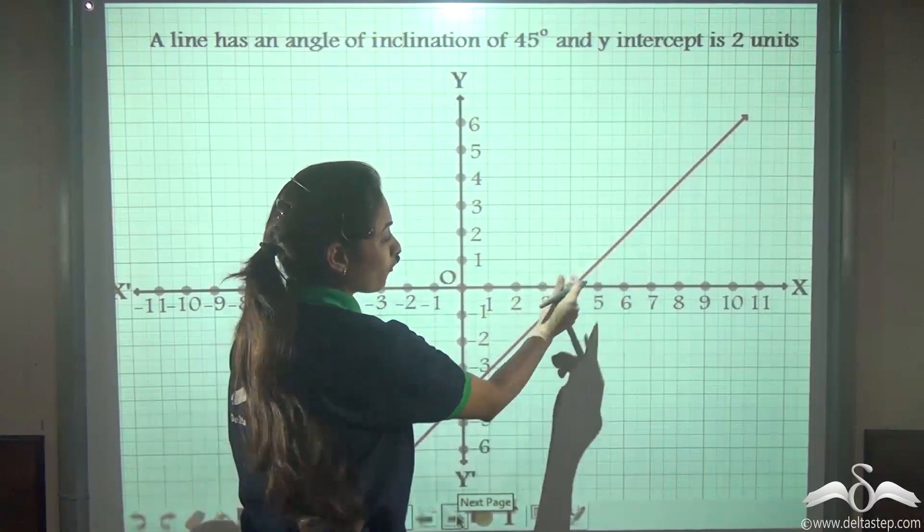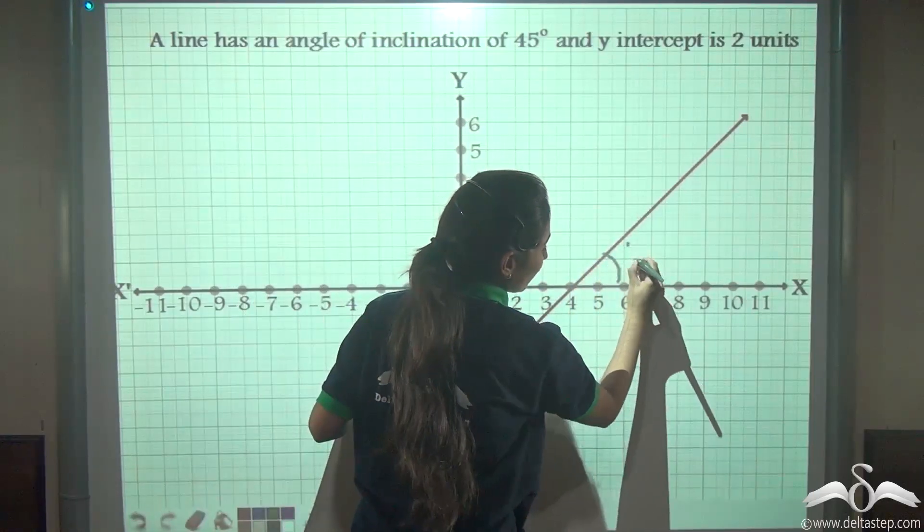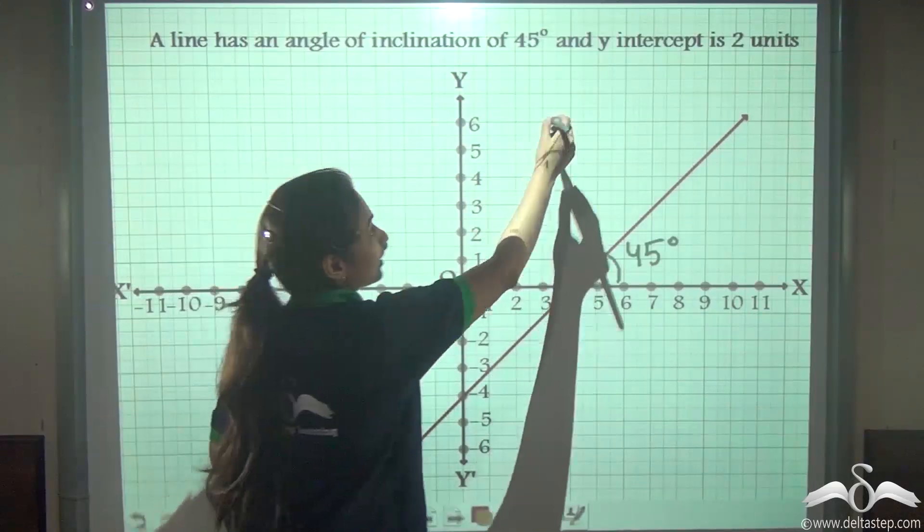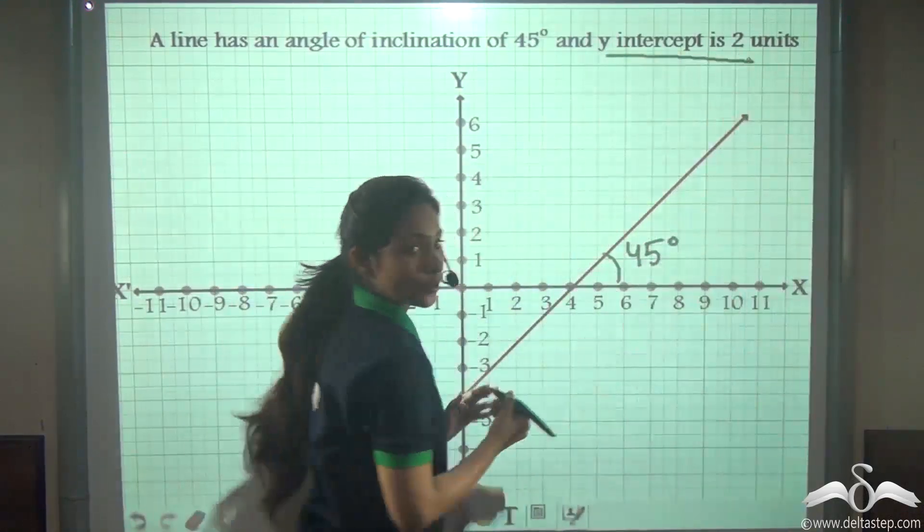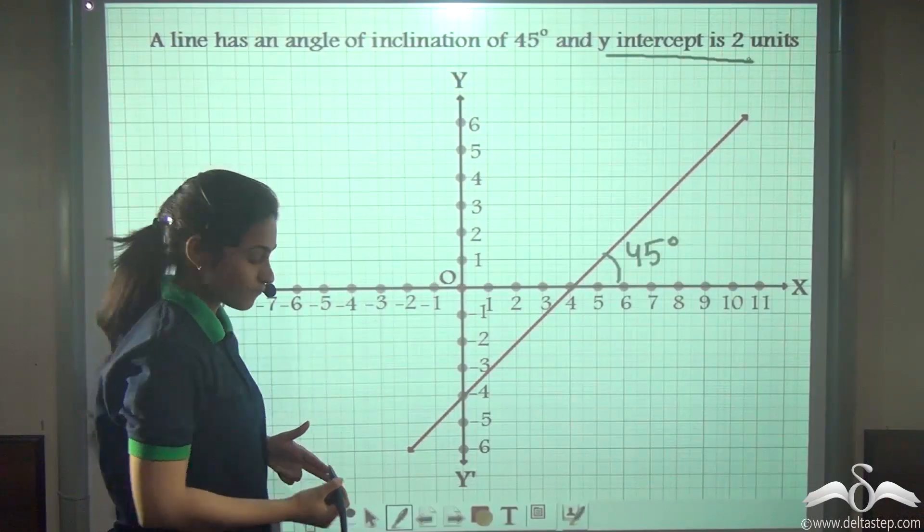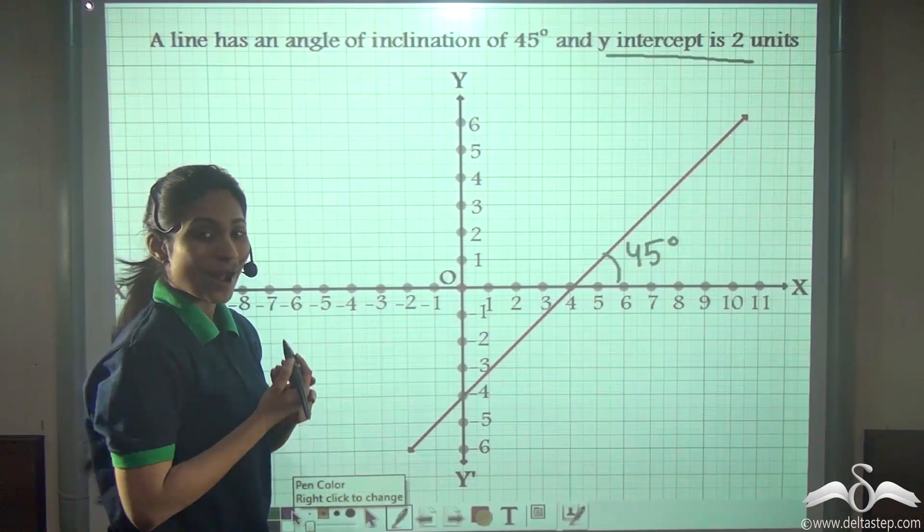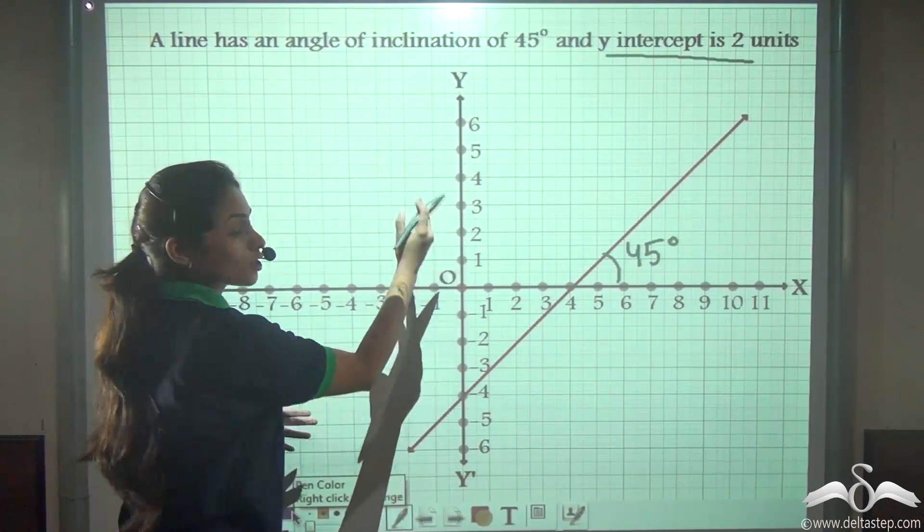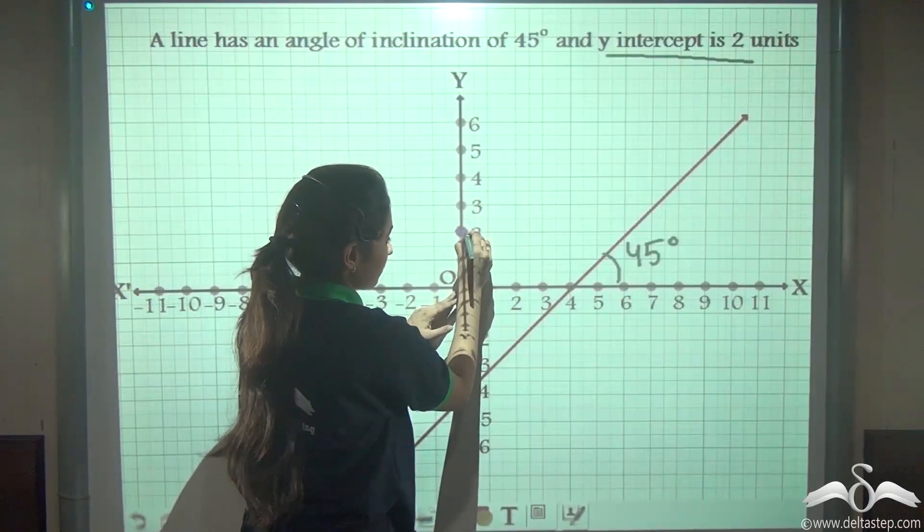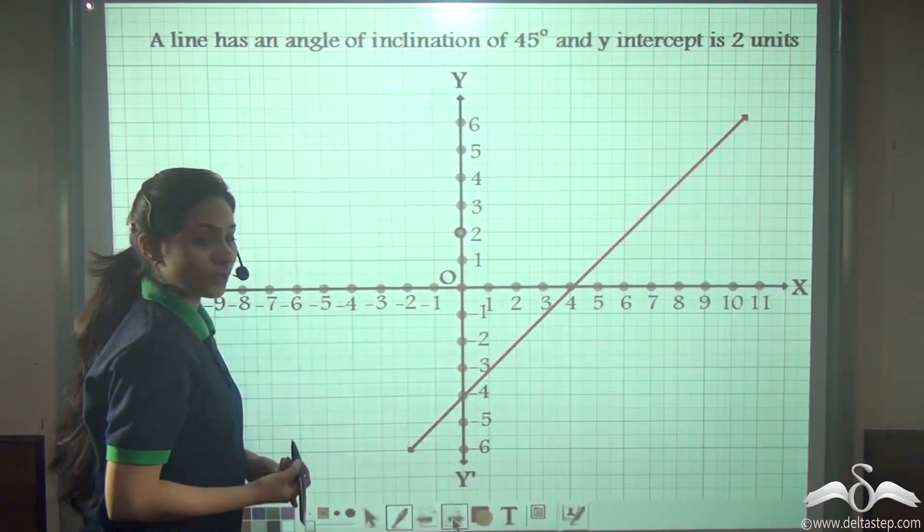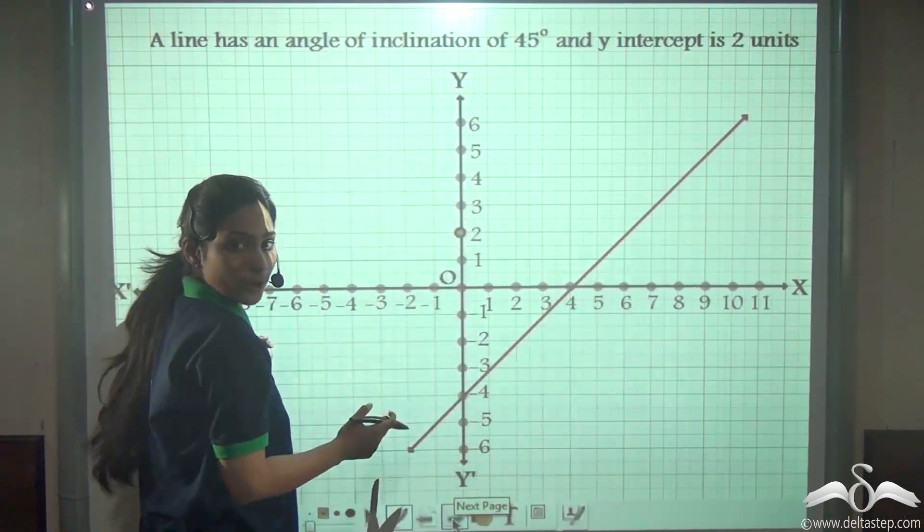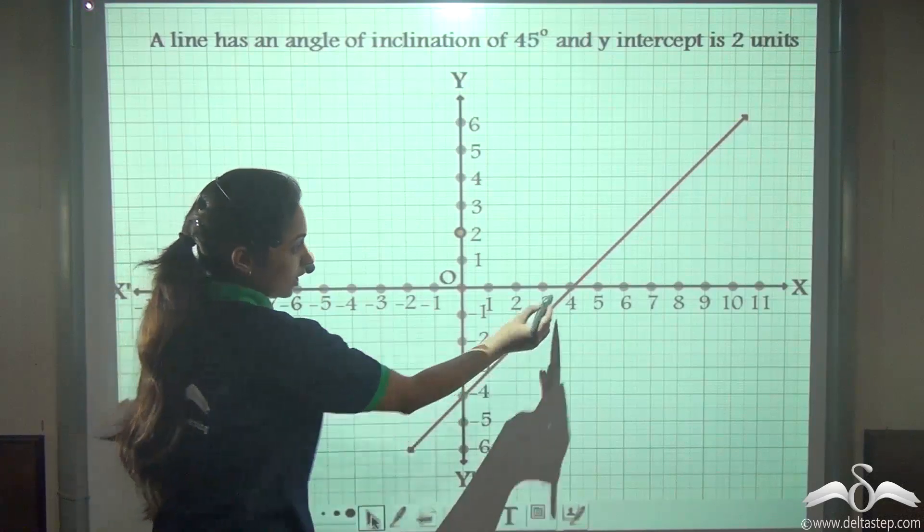Here I have just taken a random line whose angle of inclination is 45 degrees. But we have been given another information that the y-intercept is two units. Can you tell me which point here has the y-intercept as two units? Well, y-intercept two units means two units on the y-axis, so positive two. One, two, this point. Now I have to place this line which has the angle of inclination of 45 degrees to this point. So let me place it here.